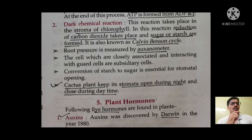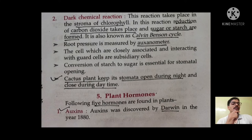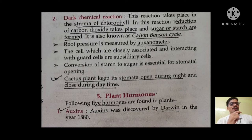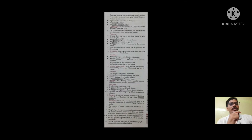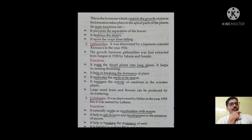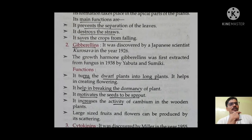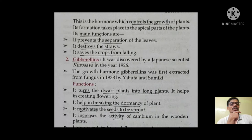Root pressure is measured by an osmometer. Cactus plants keep their stomata open during the night and closed during the daytime — the opposite of the general trend, so keep this in mind. Auxin's main function is that it controls the growth of the plant.